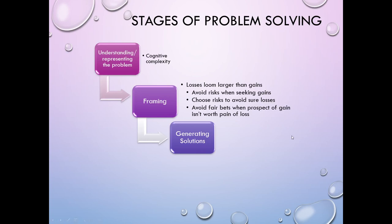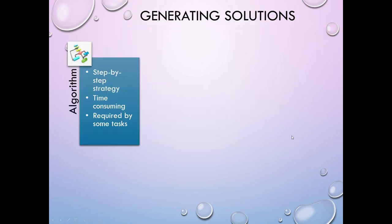We're back, and in this segment we're going to start off talking about how we generate solutions. The first solution strategy we might use is what's called an algorithm. This is a step-by-step strategy that tends to be time-consuming depending on the problem — the more elaborate the problem, the longer it'll probably take. Some tasks require an algorithmic solution; other tasks you can get away without having to follow all the steps.